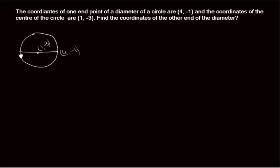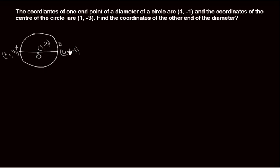So one end of the diameter we have to find — let's take this end as (x1, y1). We all know that if this is the diameter and this is the center of the diameter, then this center is nothing but the midpoint of the segment. Let this diameter be named AB, and the center is O.